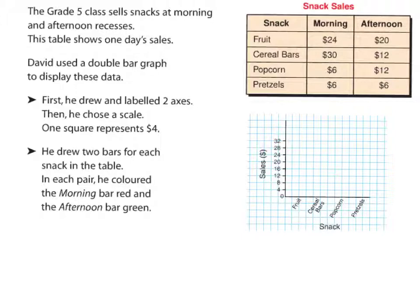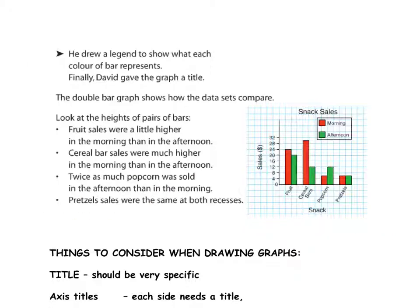It's in a regular interval. He's counted by twos the whole way. If you're counting by ones, by twos, by threes, by fives, it has to be by that same number the whole way up that axis. He's going to draw two bars for each snack in the table. And in each pair, he colored the morning bar red and the afternoon bar green. See what he's done here.